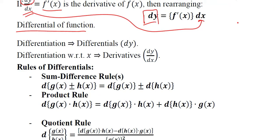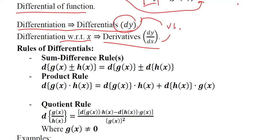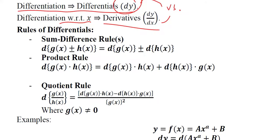Differentiation can give us a differential. We have derived the differential formula from differentiation. Differentiation with respect to x gives us the derivative, and this is the differential — you can easily see the difference between the two notations. Now we should talk about the rules of differentials. The good thing is that they are the same as the rules of differentiation.